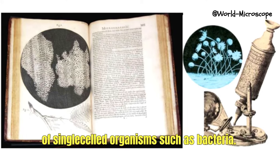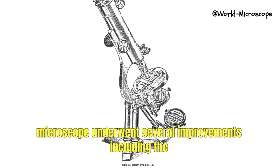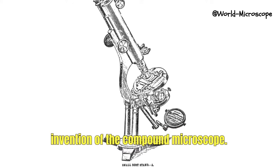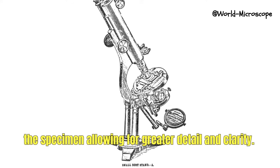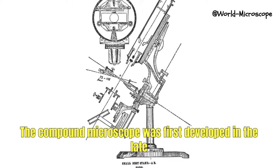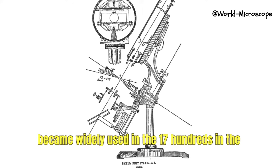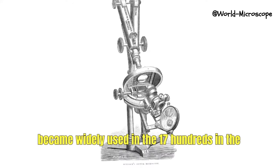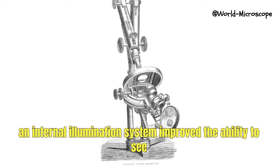He used this device to make many groundbreaking observations, including the discovery of single-celled organisms such as bacteria. Over the next few centuries, the microscope underwent several improvements, including the invention of the compound microscope. This device used two or more lenses to magnify the specimen, allowing for greater detail and clarity. The compound microscope was first developed in the late 1600s by the English scientist Robert Hooke.